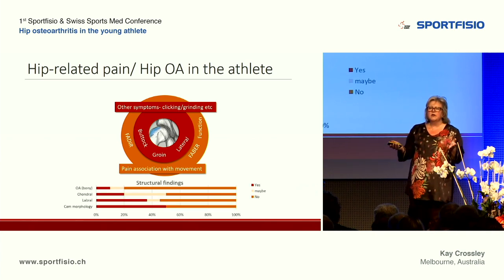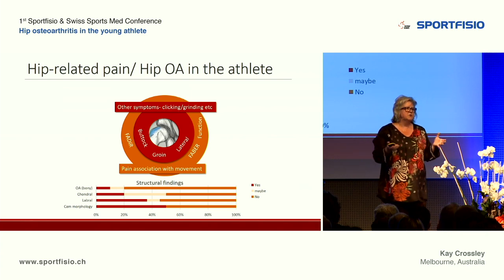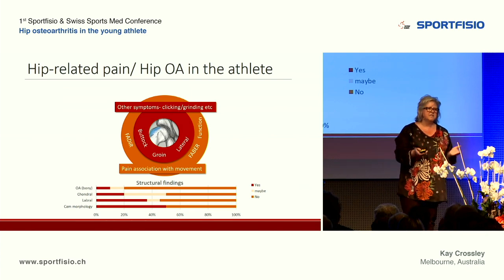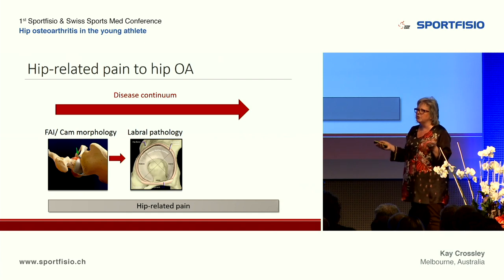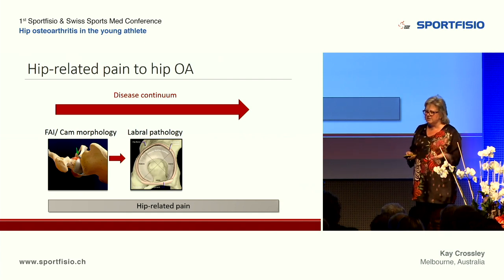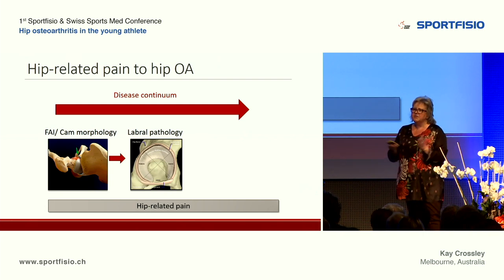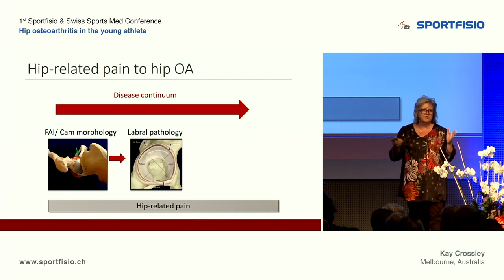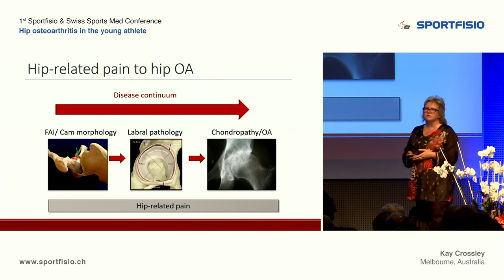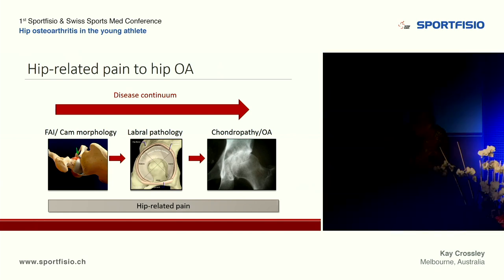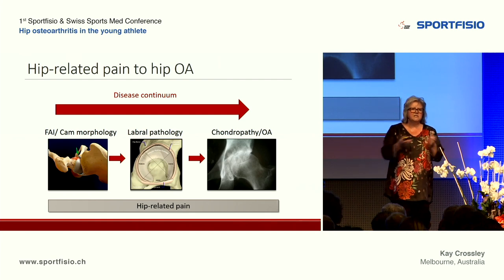We're going to look at how many of those people actually have some sort of structural deformity representing early osteoarthritis. With hip-related pain, we often consider a condition beginning with CAM morphology or FAIS, which can lead to labral pathology, then chondral damage, and eventually to end-stage osteoarthritis — a spectrum of OA occurring in people with hip-related pain.